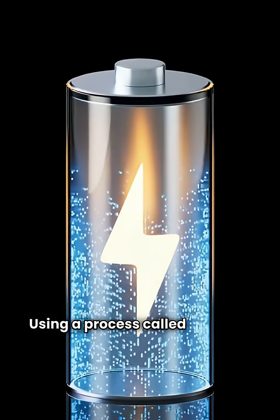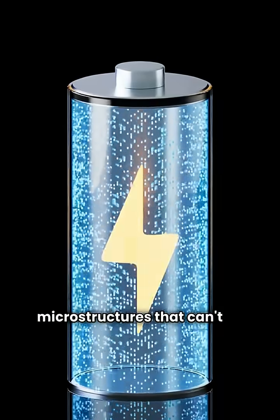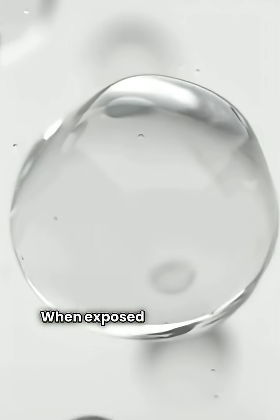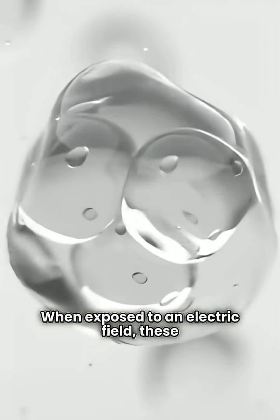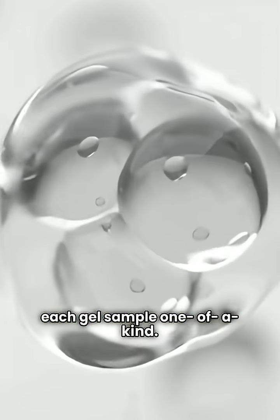Using a process called regional assembly cross-linking, it creates complex microstructures that can't be replicated. When exposed to an electric field, these materials form a unique 3D network, making each gel sample one of a kind.